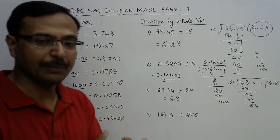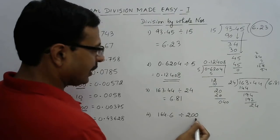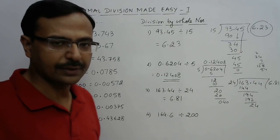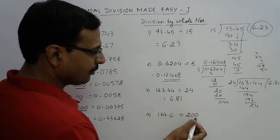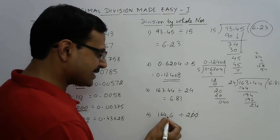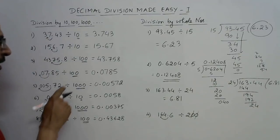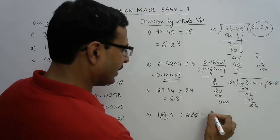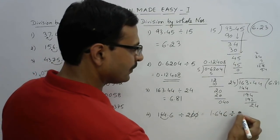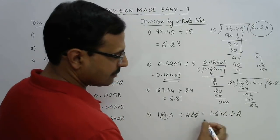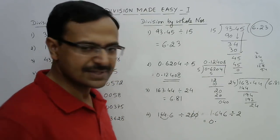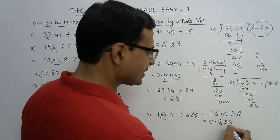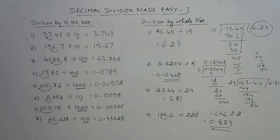Now consider 164.62 divided by 200. Instead of dividing by 200 directly, we cancel the two zeros and shift the decimal two digits towards the left, as we learned for base quantities. So this becomes 1.6462 divided by 2. Since 2 does not go into 1, our answer starts with 0-point. Then 2 × 8 = 16, 2 × 4 = 8 wait — 16 ÷ 2 = 8, 4 ÷ 2 = 2 wait — working through: 0.823 is the answer.